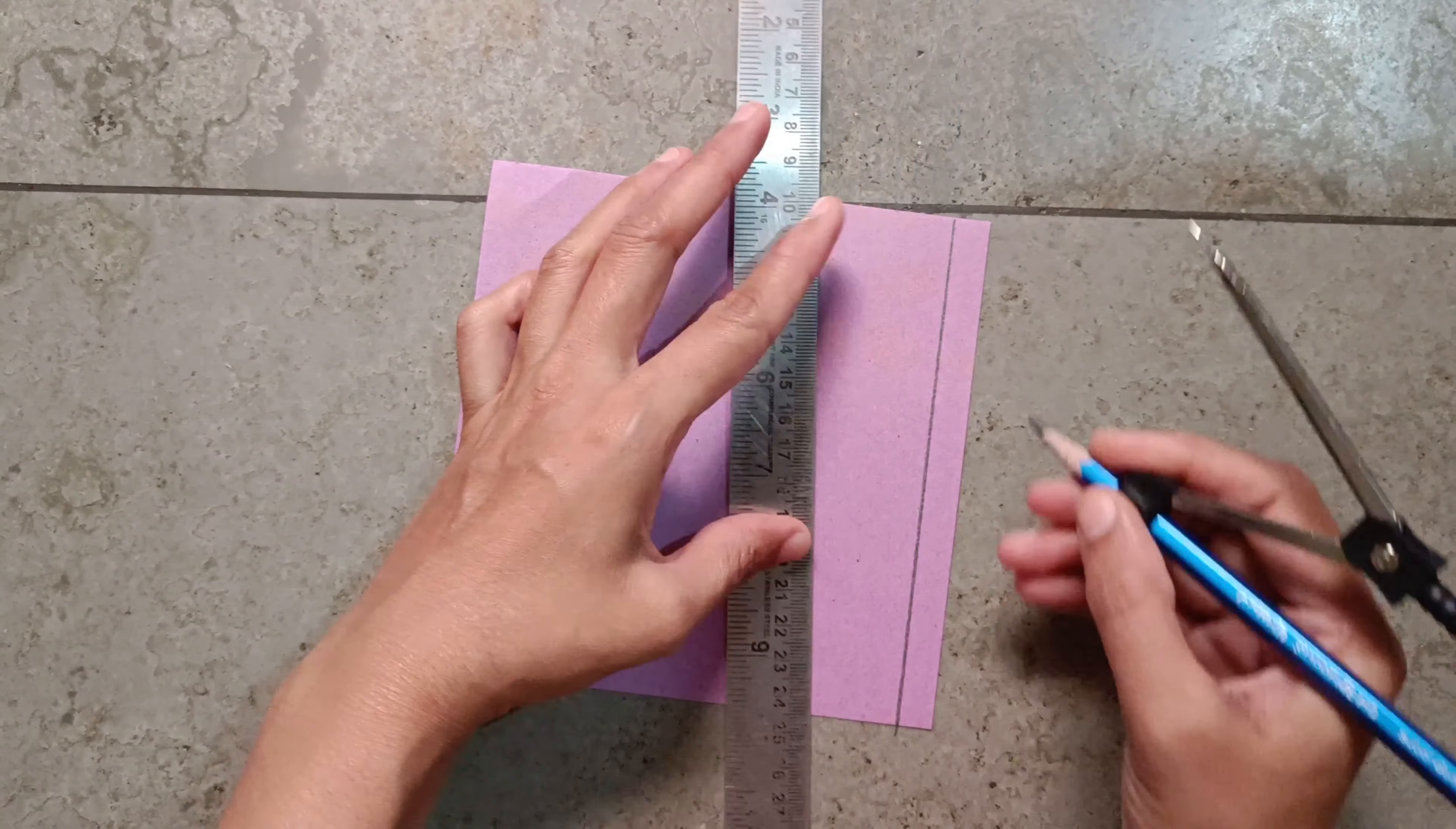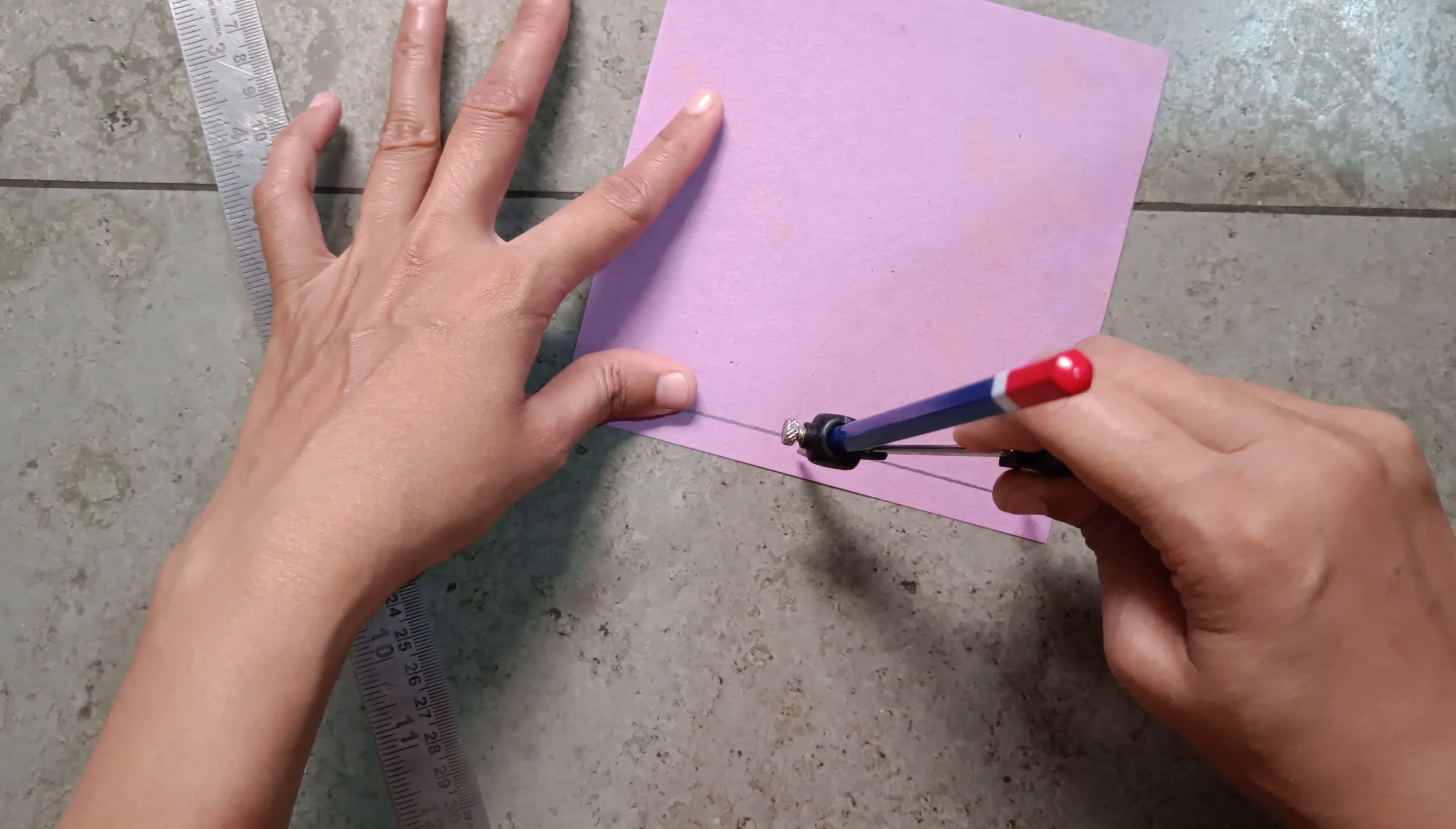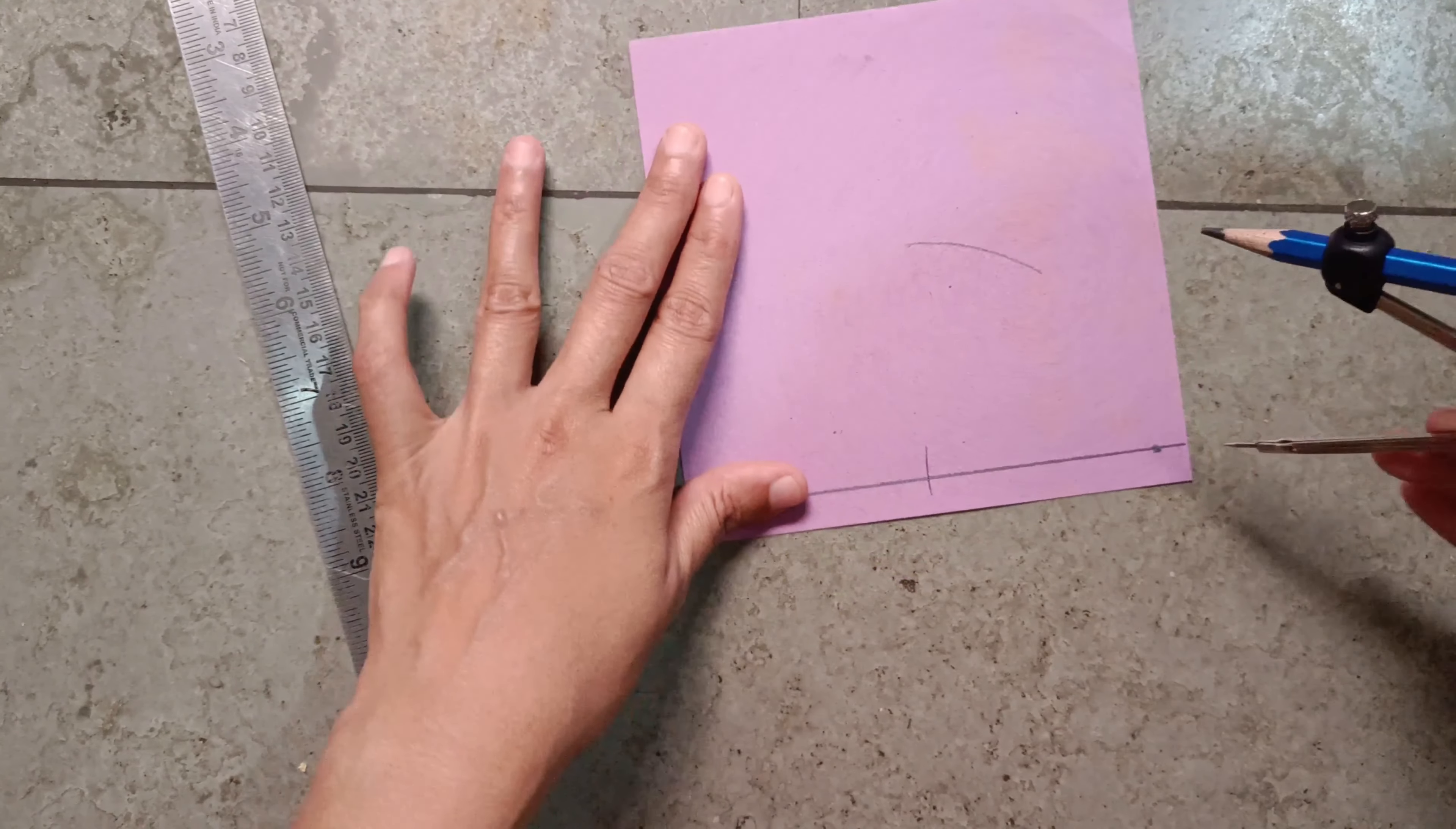With a compass, keep the pointer on the line and make a curve. Keep it on this point and make a curve from here.